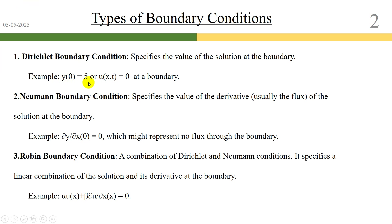In a two-variable problem where you have two independent variables x and t, and u depends on x and t, the value of u at a particular location x and a particular time t equal to 0 is also a Dirichlet boundary condition, since 0 is a constant value.